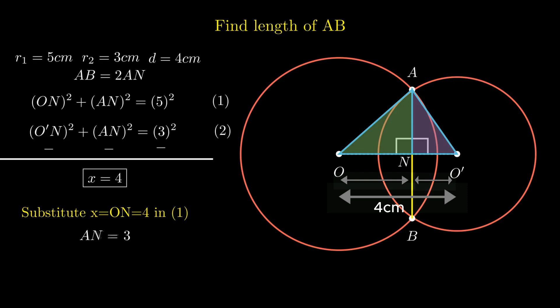Now, we can calculate the length of the common chord AB as twice of 3, which is 6 cm.